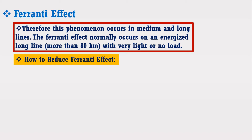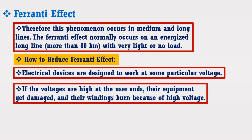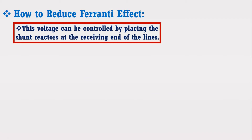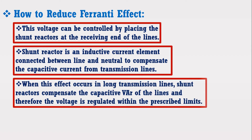Electrical devices are designed to work at some particular voltage. If the voltages are higher at the user ends, their equipment gets damaged and their windings burn because of high voltage. This voltage can be controlled by placing shunt reactors at the receiving end of the lines. A shunt reactor is an inductive current element connected between the line and neutral to compensate the capacitive current from the transmission line. When this effect occurs in long transmission lines, shunt reactors compensate the capacitive VAR of the lines and therefore the voltage is regulated within the prescribed limits.